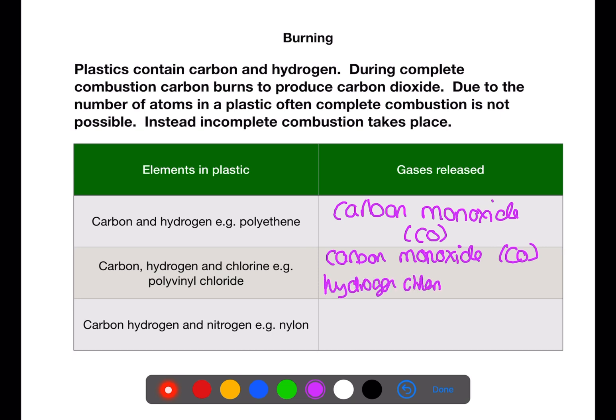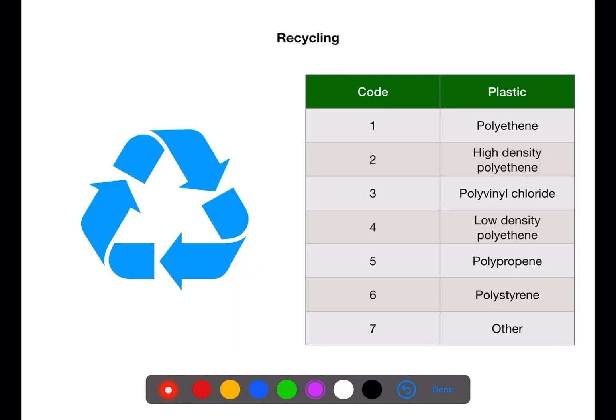Where a plastic only contains carbon and hydrogen, carbon monoxide will be released during incomplete combustion. Where a plastic also contains chlorine, hydrogen chloride will also be produced in addition to carbon monoxide. Where there is also nitrogen present, you will get carbon monoxide and hydrogen cyanide being produced. Hydrogen cyanide is a toxic gas.